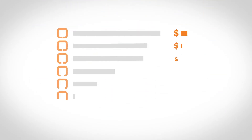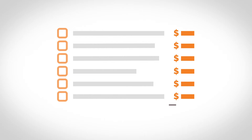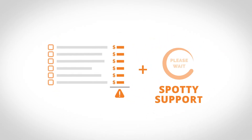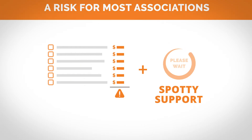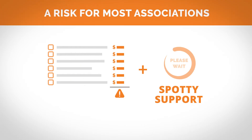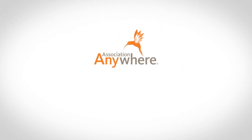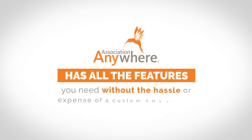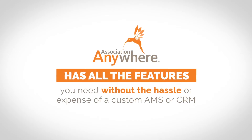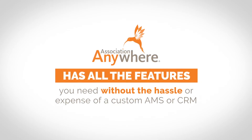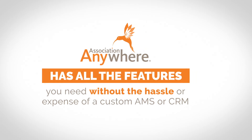Every association has additional needs that most off-the-shelf systems can't address. But a hefty price tag and spotty support makes customizing software a risk for most associations. Association Anywhere AMS has all the features you need, but without the hassle or expense of a custom AMS or CRM.